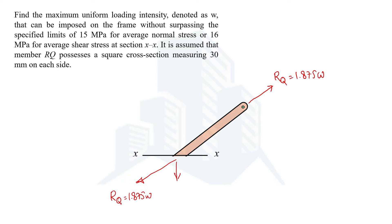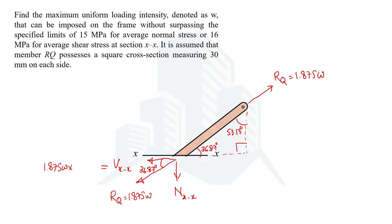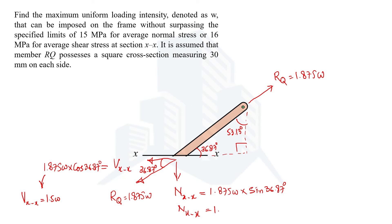The horizontal and vertical components of this 1.875W force are actually the normal force and shear force at the section. Recalling that this angle is 53.13°, making a right angle triangle gives the complementary angle as 36.87°. The shear force VXX equals 1.875W × cos 36.87°, and the normal force NXX equals 1.875W × sin 36.87°. Simplifying: VXX = 1.5W and NXX = 1.125W.